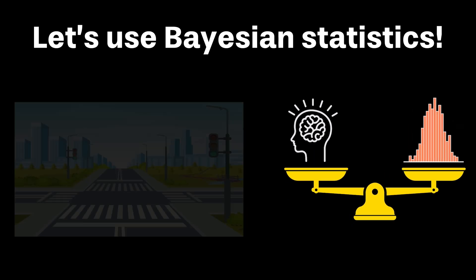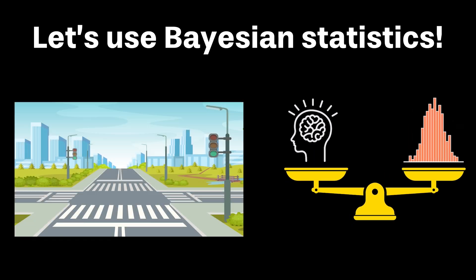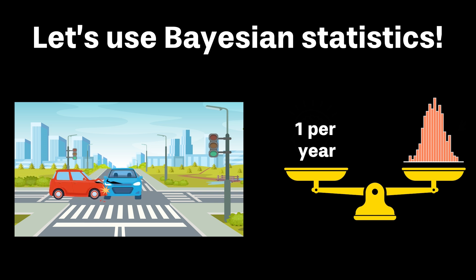For example, suppose that you just designed a traffic intersection so that it should experience only one accident per year. However, a traffic accident occurred in just its first month since opening. Therefore, what is the right estimate around its accident frequency?